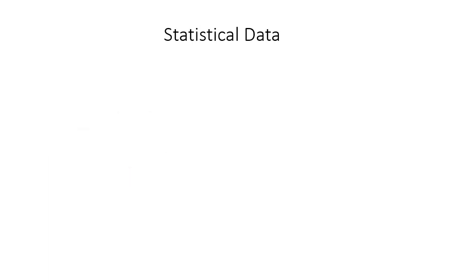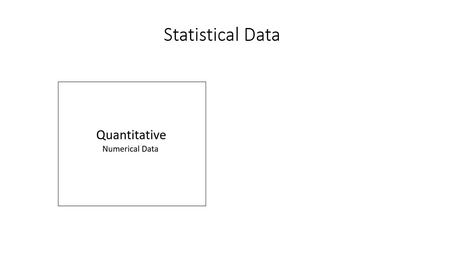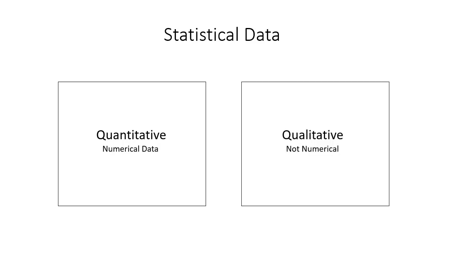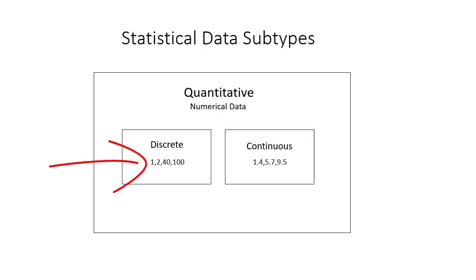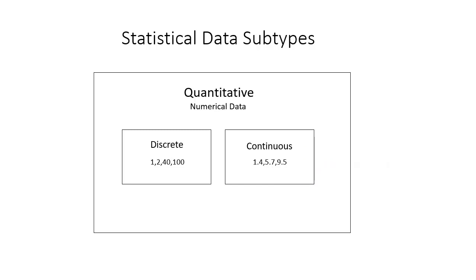Statistical data can be classified in several ways. The first characterization is whether the data is numerical or not. If your data is numerical, you have quantitative data; if non-numerical, you have qualitative data, often referred to as categorical data. Within quantitative data there are subtypes: discrete data, which are whole numbers that can't be divided (for example, you can't have 19.5 students in a classroom), and continuous data, which continues on and can be broken down into smaller and smaller units.